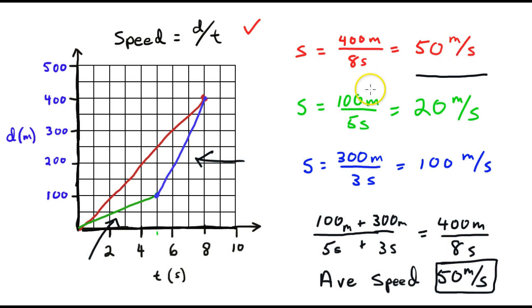And it would be the same average if it went a different path. If it went at a constant rate of 400 meters in the 8 seconds as shown in the red.